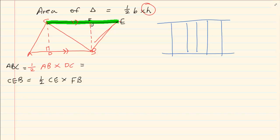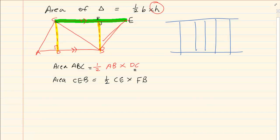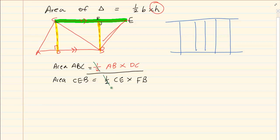We know that FB is equal to CD. Now look at the two: the area of ABC is equal to half AB times DC. If we were to write it as a ratio, half would cancel with half. We know that FB is equal to CD, so that could cancel. What we can say about the ratios of the areas is that it would be relevant to their bases.